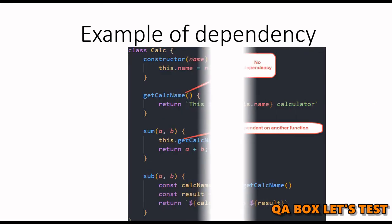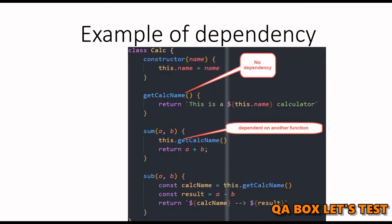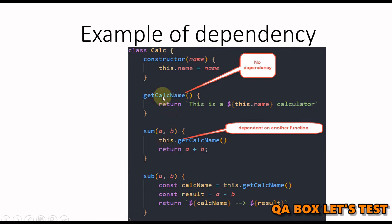An example of a dependency: there is a Calculator class written in JavaScript. The constructor is the first method. One method has no dependency at all. Then there is the sum method — it takes two arguments and calls another internal function. So this sum function is dependent on that other function. While testing the sum function, we want to make sure we handle this dependency first, because we are testing this function and want to see whether it works properly. We have to get rid of this dependency.